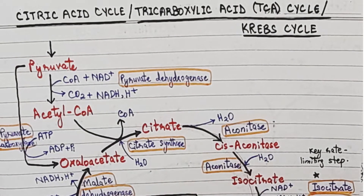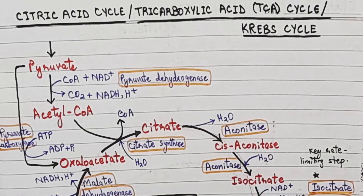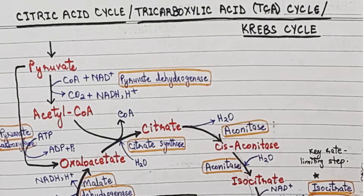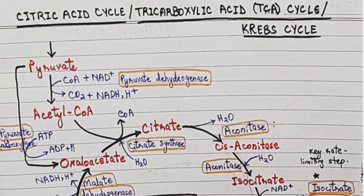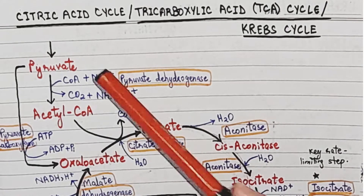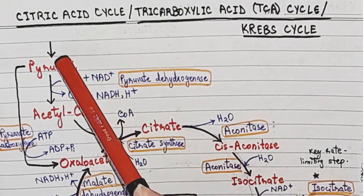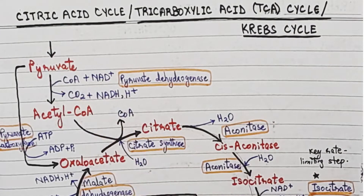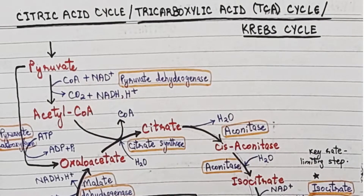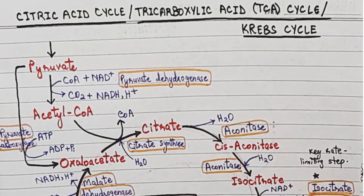I will explain it to you and you can go through it once or twice. Let's start. We know the citric acid cycle takes place in the mitochondria. From glycolysis we get pyruvate — specifically 2 pyruvates. One pyruvate will go into the citric acid cycle, and the other pyruvate will also go into the citric acid cycle. So for one glucose molecule, the citric acid cycle runs 2 times.